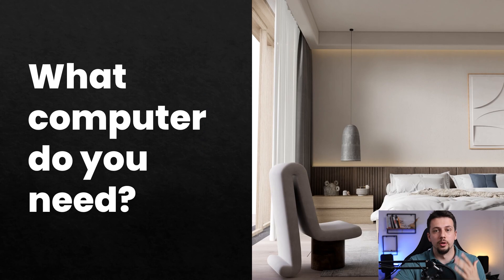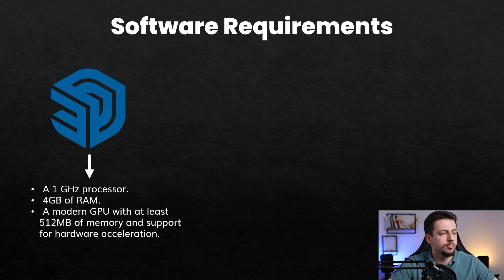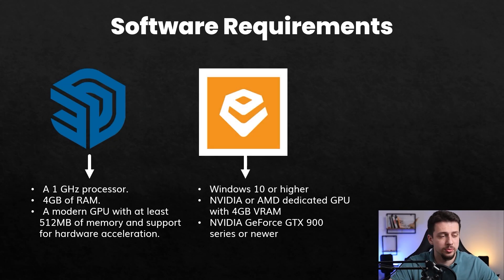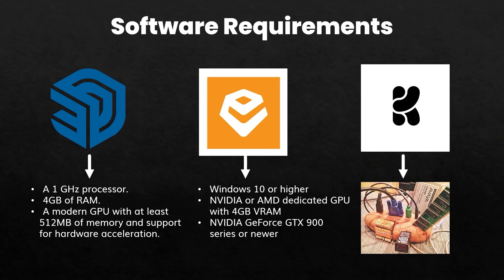What computer do you need in order to run the software? For SketchUp, you need a 1 GHz processor, 4 GB of RAM, and a modern GPU with at least 512 MB of VRAM. The barrier to entry is very low. For Enscape, you only need Windows 10 or higher and an NVIDIA or AMD GPU with 4 GB of VRAM — basically an NVIDIA GeForce GTX 900 series or newer. For Kriya, all you need is basically any computer — it's that simple.